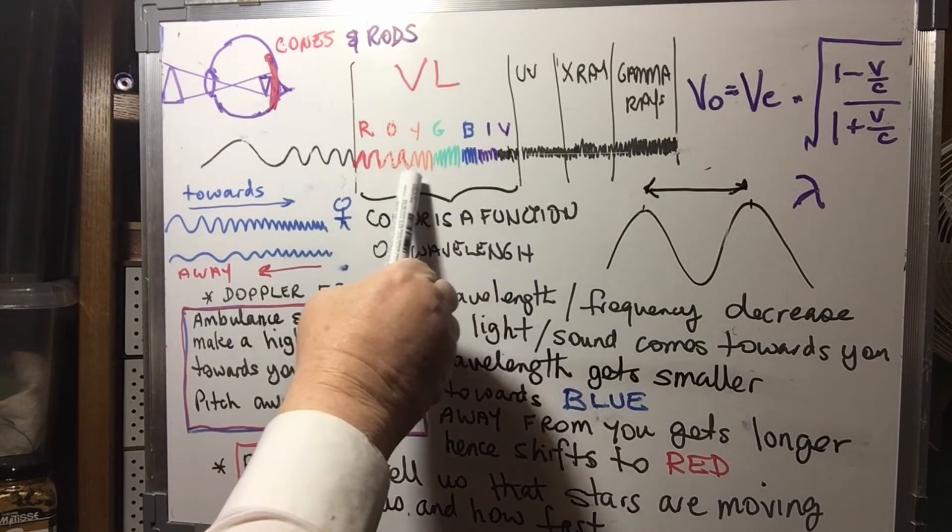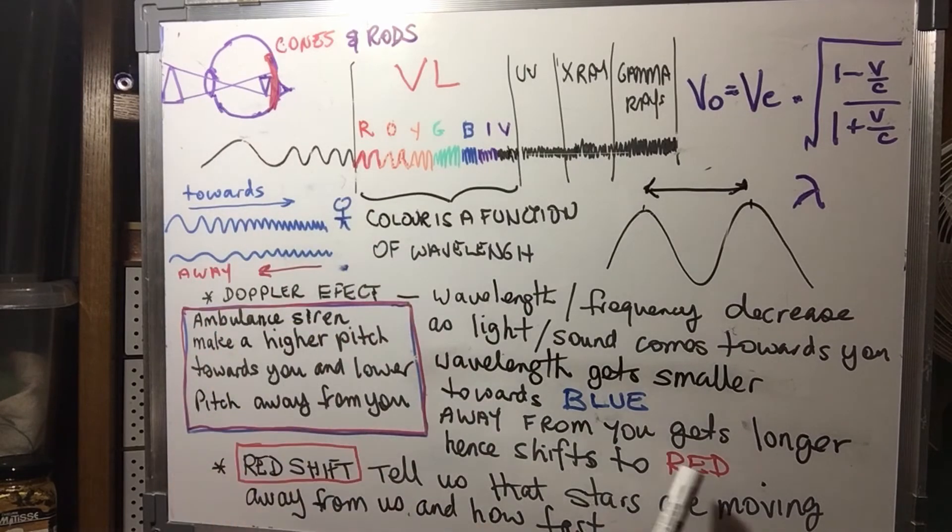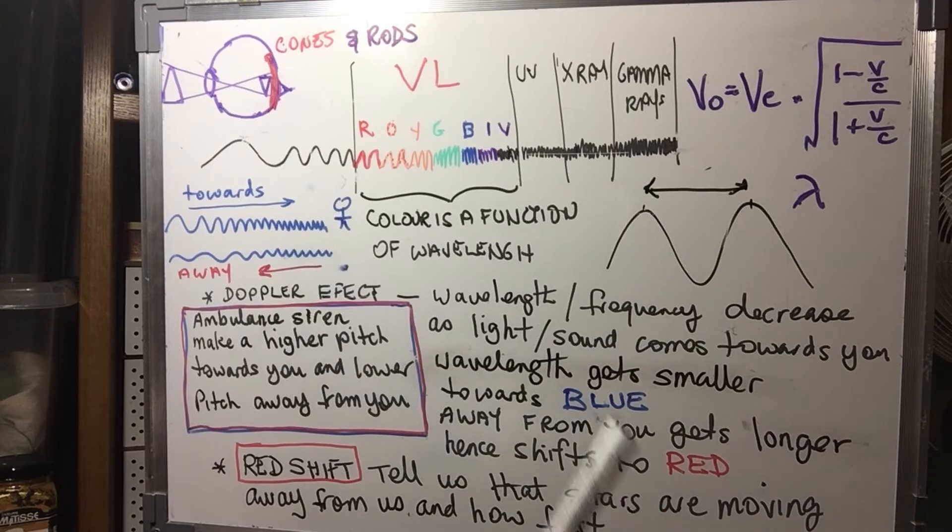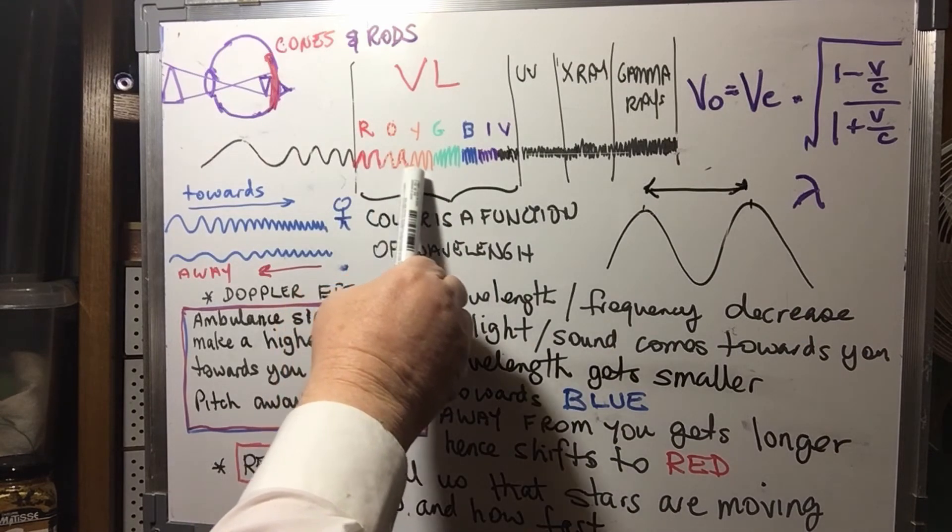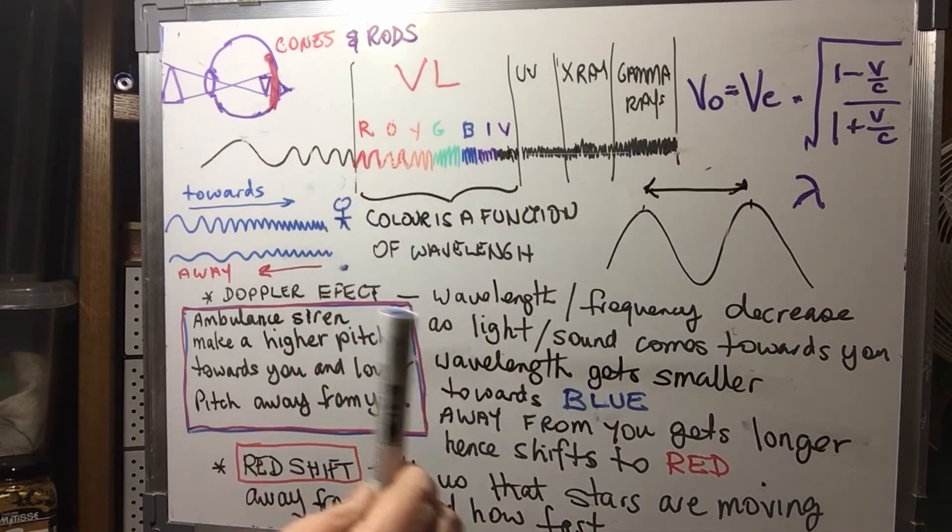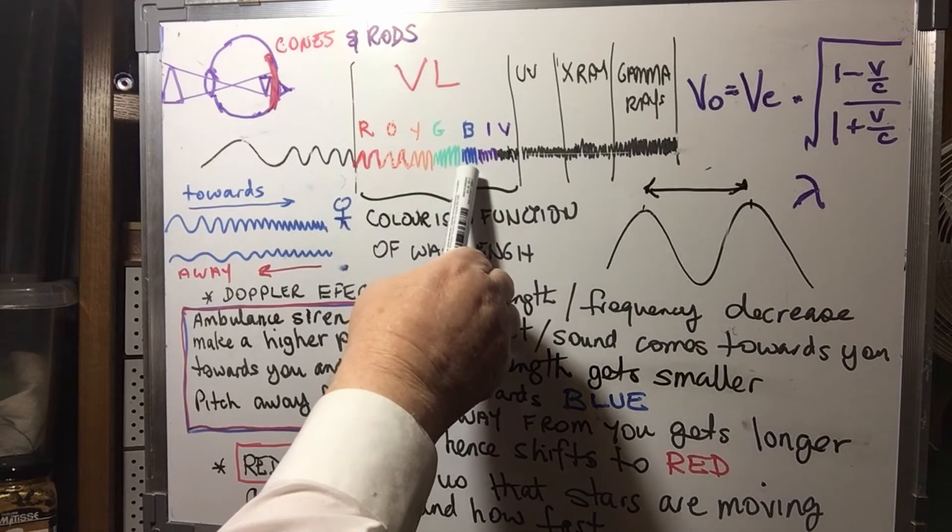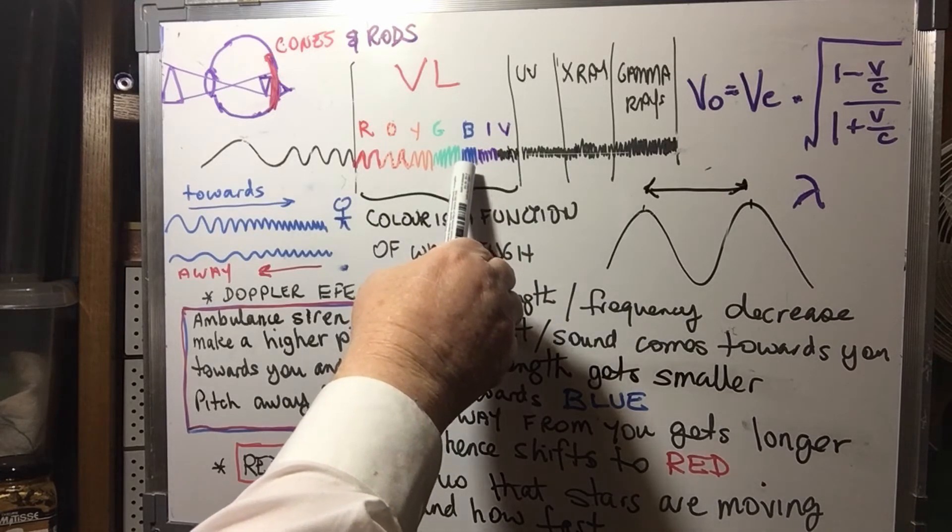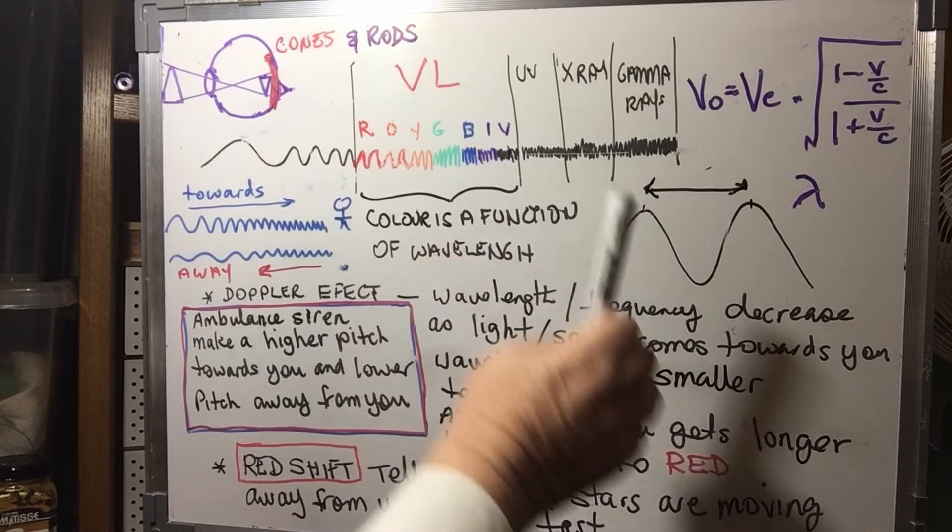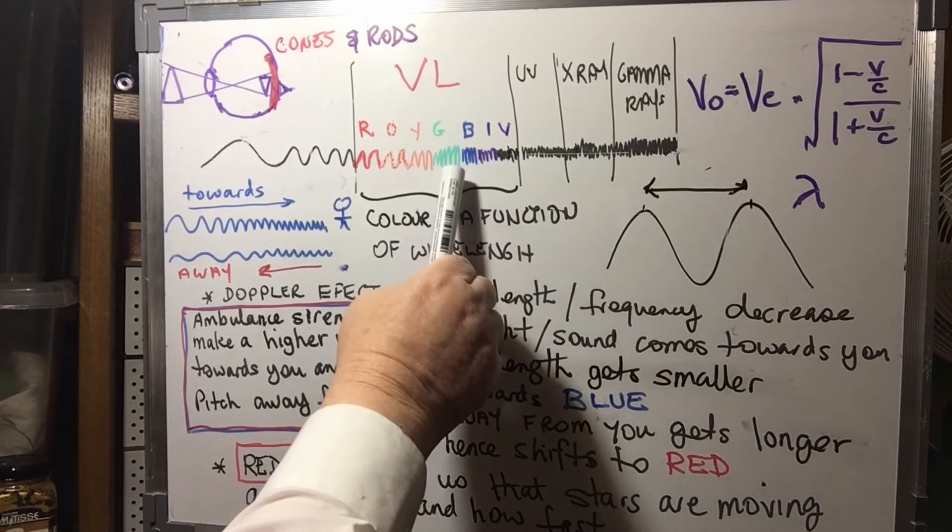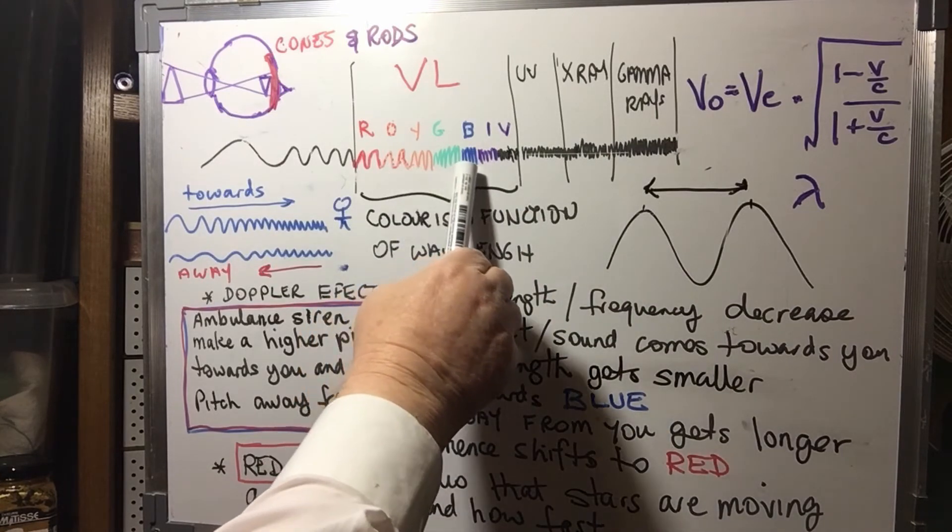Okay so longer and longer means shifting towards red, so hence it's to the red and that's what's called red shift. Now if it's coming towards you then because it's coming towards us and the stars if you like are moving towards us or we're moving towards it, then what's happening is that those wavelengths are getting shorter and shorter and shifting towards blue.